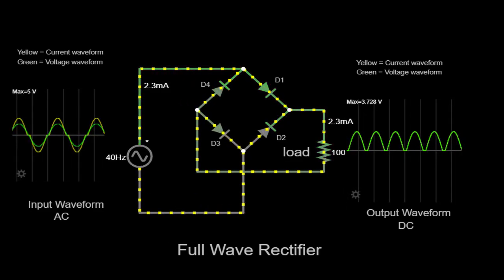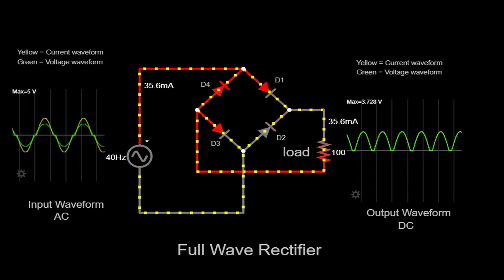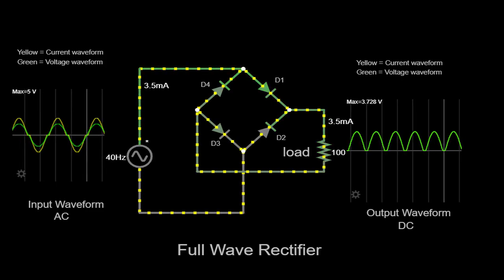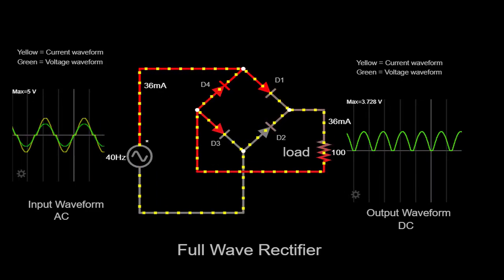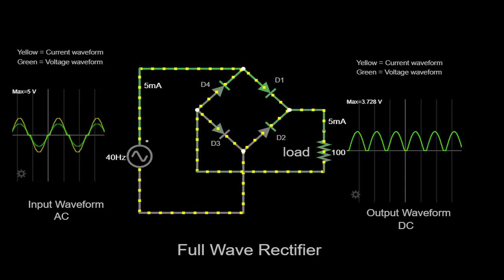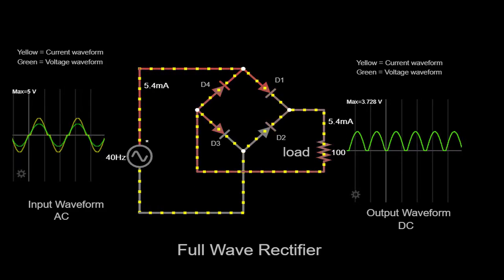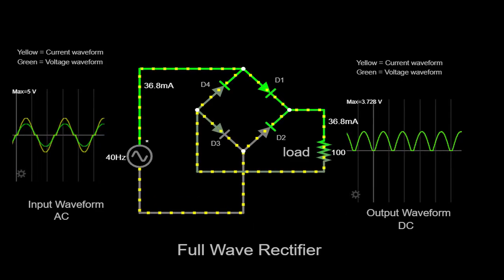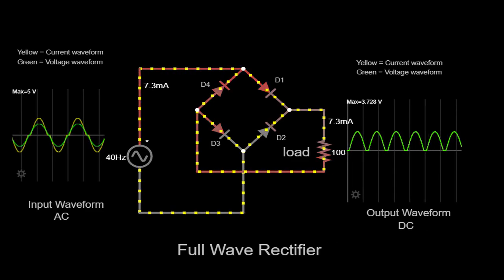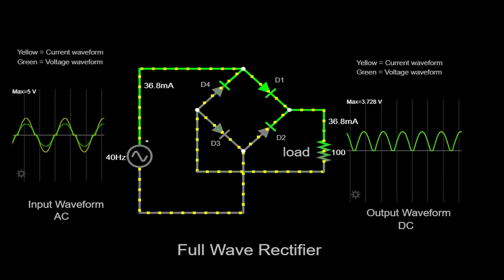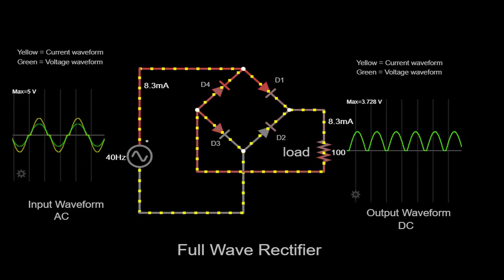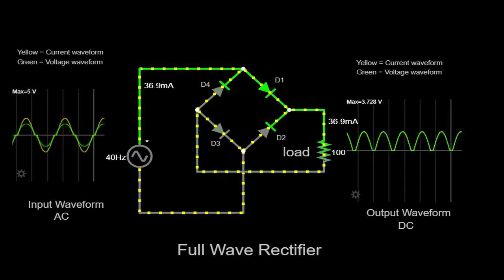As a result of this arrangement, what we observe at the output is a rectified waveform. The negative half cycles of the AC input are inverted to positive half cycles at the output, providing us with a smoother DC waveform. The diodes essentially act as one-way valves, allowing current to flow in one direction while blocking it in the reverse direction. This rectified waveform is now suitable for powering devices that require direct current, such as electronic circuits, appliances, or electronic gadgets.